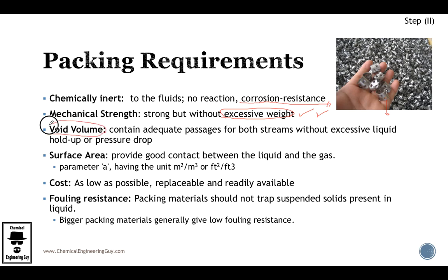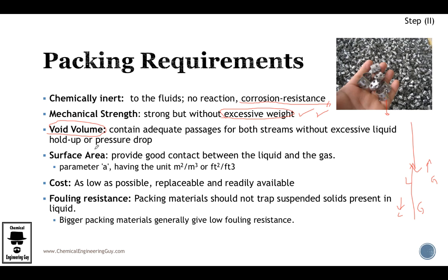Void volume is also another concept to consider — it must contain adequate passage for both streams throughout the operation. You don't want a packing that allows a lot of liquid flow but small gas flow, and the reverse is also true. You want a balance. Also, the higher the surface area, the more liquid will interact with the packing and therefore the more it will interact with the gas. The typical unit for surface area, called parameter A, is square meters of surface area per volume of packings.